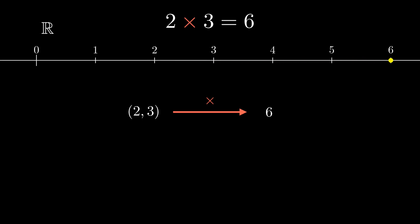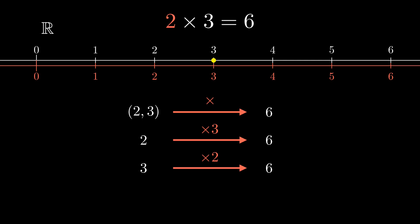The second, 2 is a point, and the transformation times 3 is acting on that point to send it to a new point, 6. The third, 3 is a point, and the transformation times 2 is acting on that point to send it to a new point, 6.